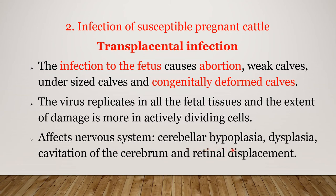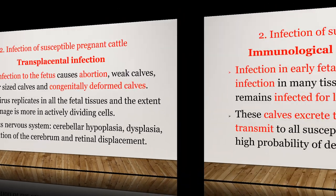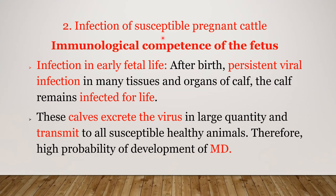The virus affects the nervous system of the fetus, and the born calf will have defects such as cerebral hypoplasia, dysplasia, cavity formation in the cerebrum, and retinal detachment or retinal displacement of the eye. Now studying the second part: immunological competence of the fetus — infection of susceptible pregnant cattle.